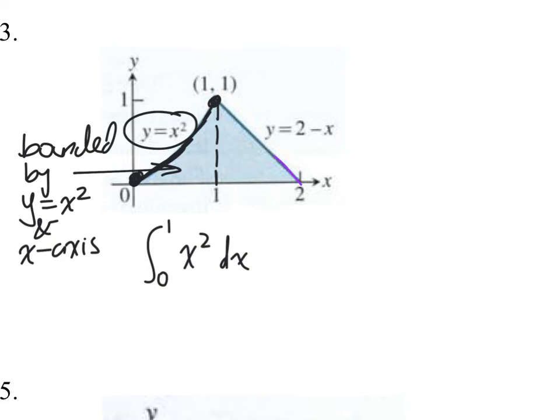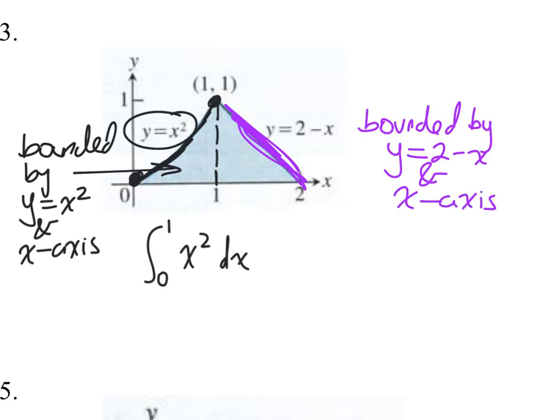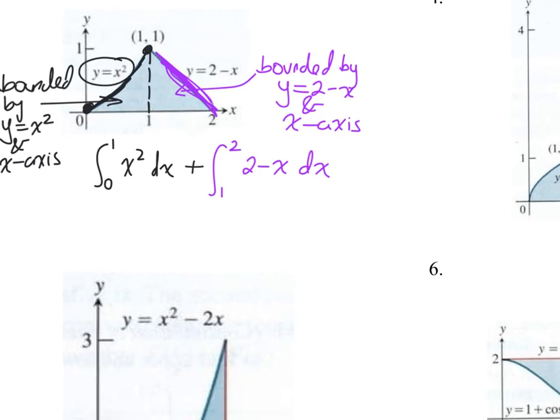So if you have a part of it that's below the x-axis, then you account for it by just throwing an absolute value symbol around it. The second piece, I'll go purple for those keeping score at home, that's bounded by y equals 2 minus x and the x-axis. Function and x-axis, good to go. Function and something else, we got a problem. So ask yourself, if I create an integral going from 1 to 2 of 2 minus x dx, will that get me the bounded area? It sure does. Add them together, I have what I need.